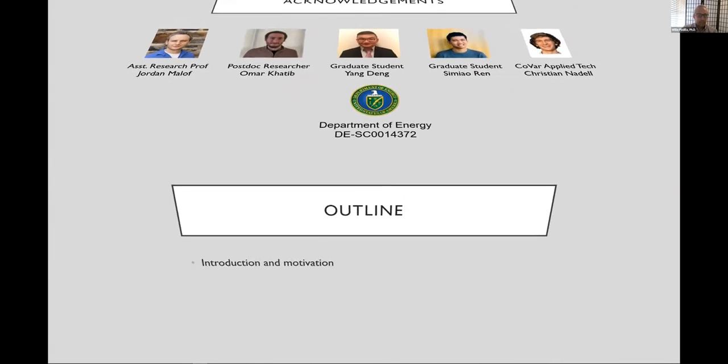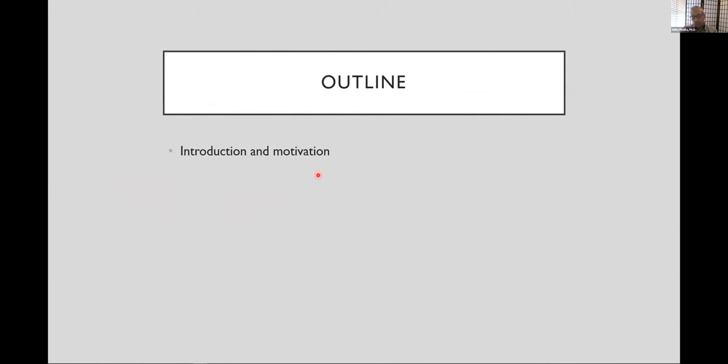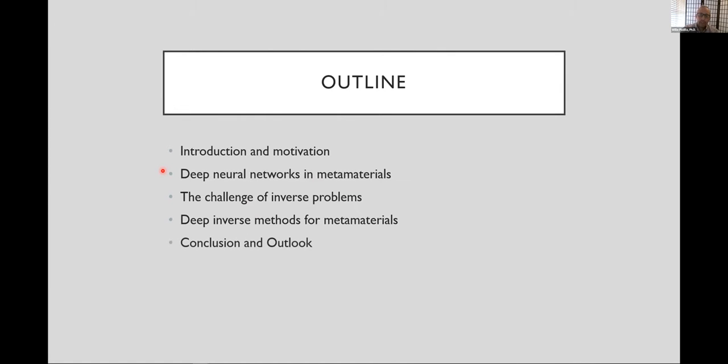I thought I'd start by giving an introduction and motivation into why we got into deep learning and what metamaterials are, for those of you that don't know. I'll show you some of our work in deep neural networks for the forward model of metamaterials, and I'll show you that really ultimately what we want in this type of research is to really solve an inverse problem. I'll first outline the challenges of that, and then I'll show you that nonetheless, despite those challenges, some ways that we've been successful at solving this inverse challenge. And then I'll conclude and give you my perspective on the future.